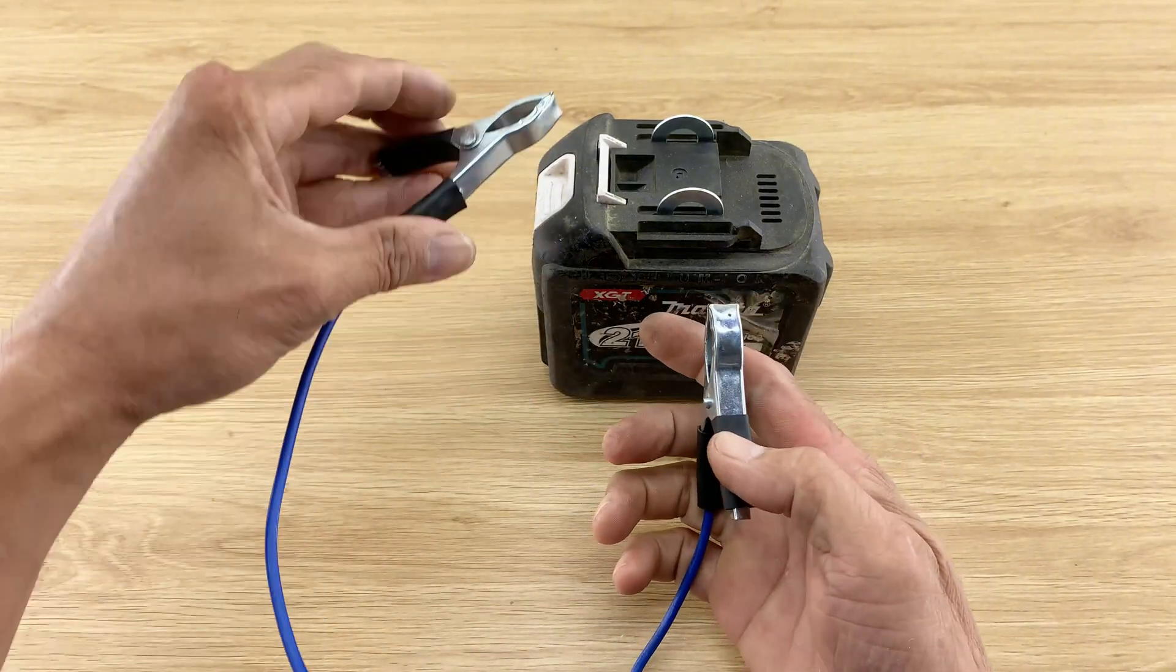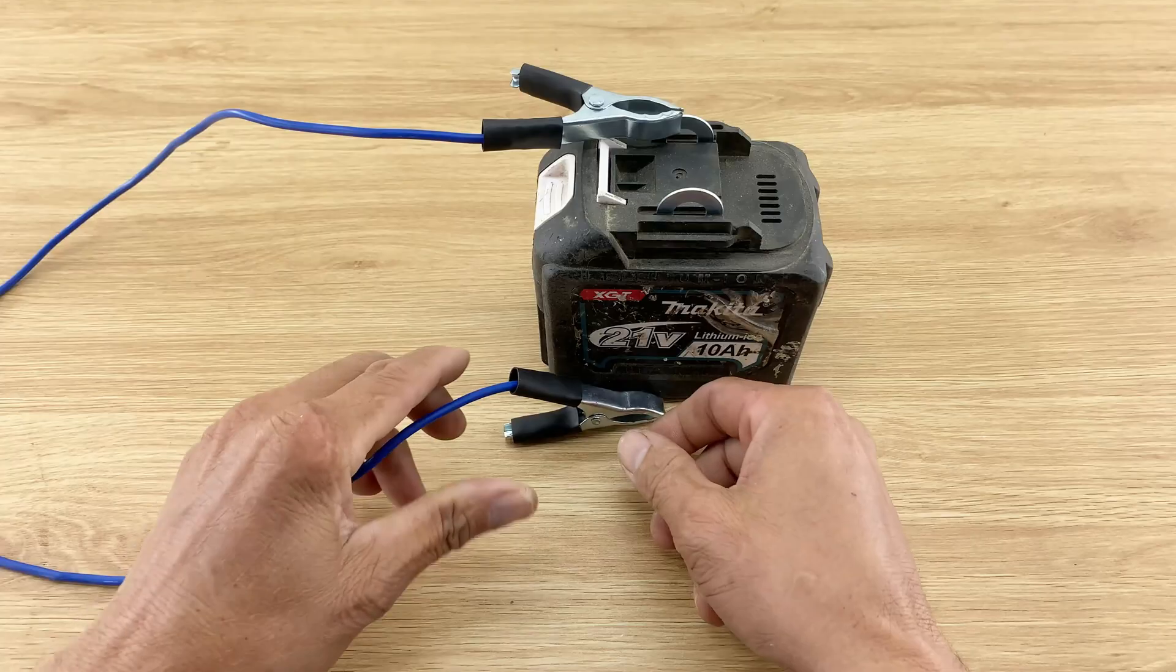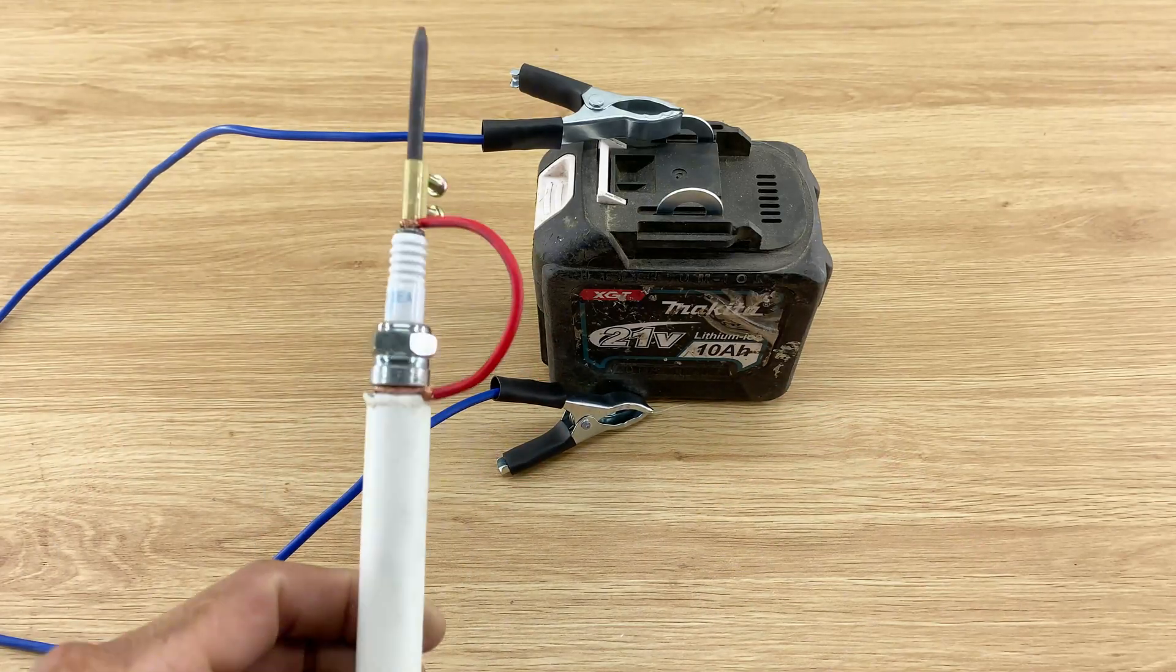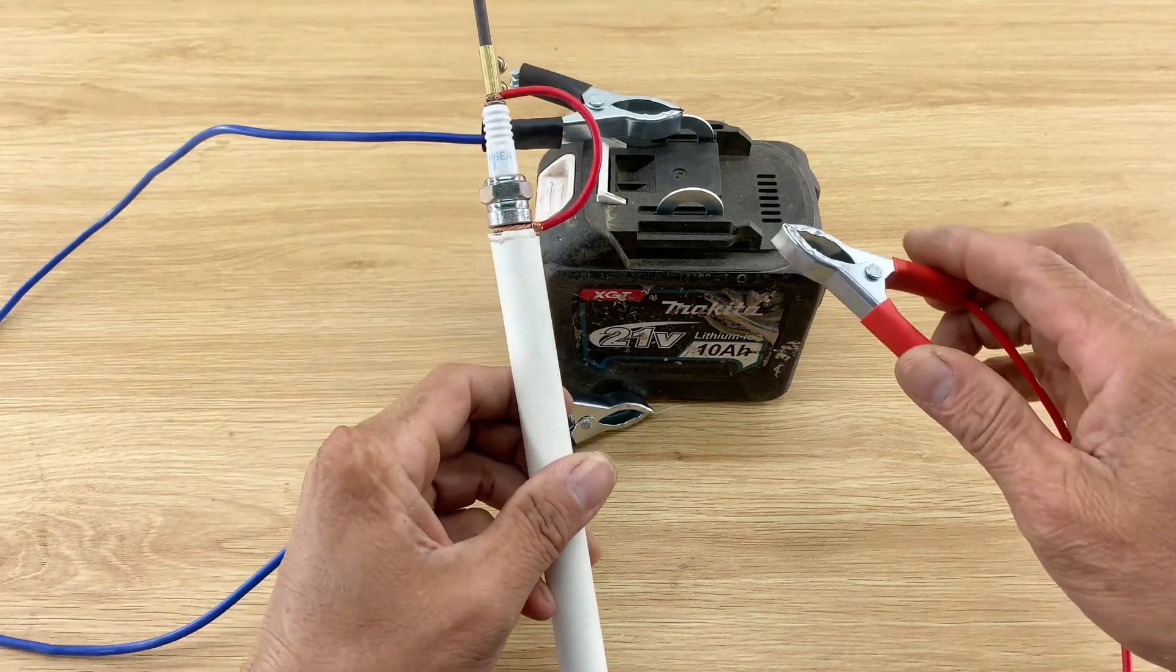I attach two washers to the 21V battery terminals for easy alligator clip connection. I'll connect the black alligator clip to one terminal of the battery and the red alligator clip from our spark plug tool to the other terminal.